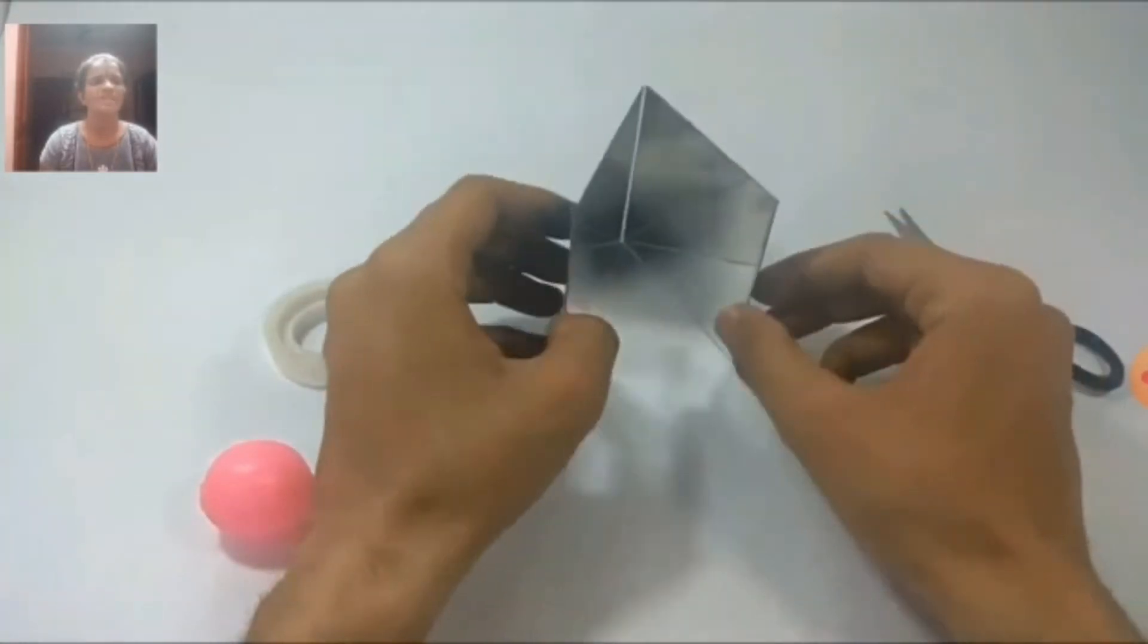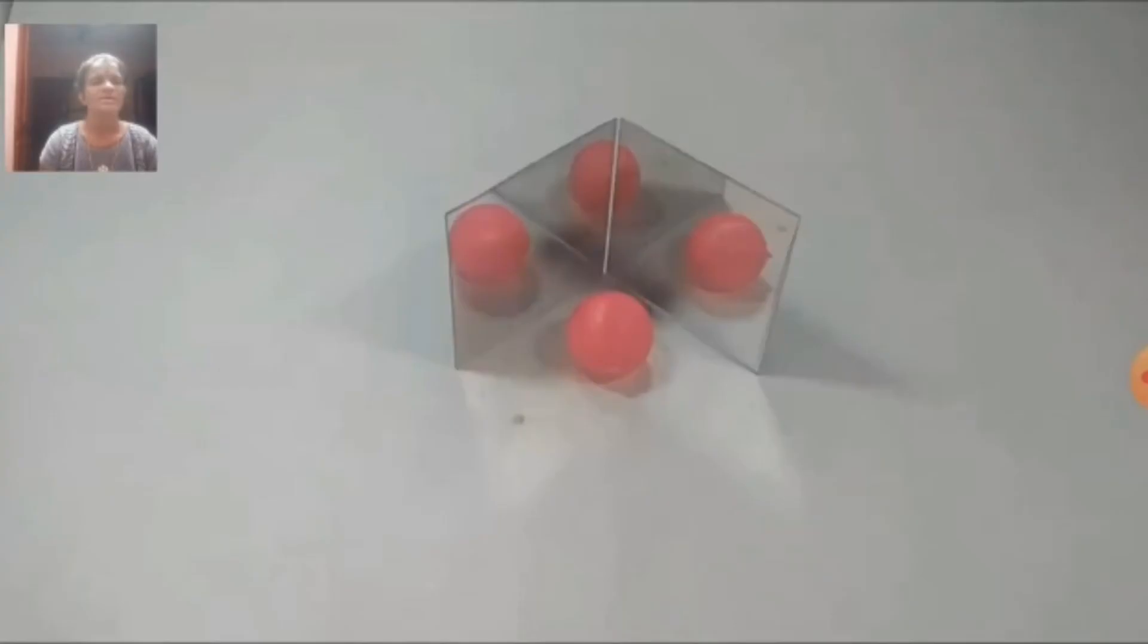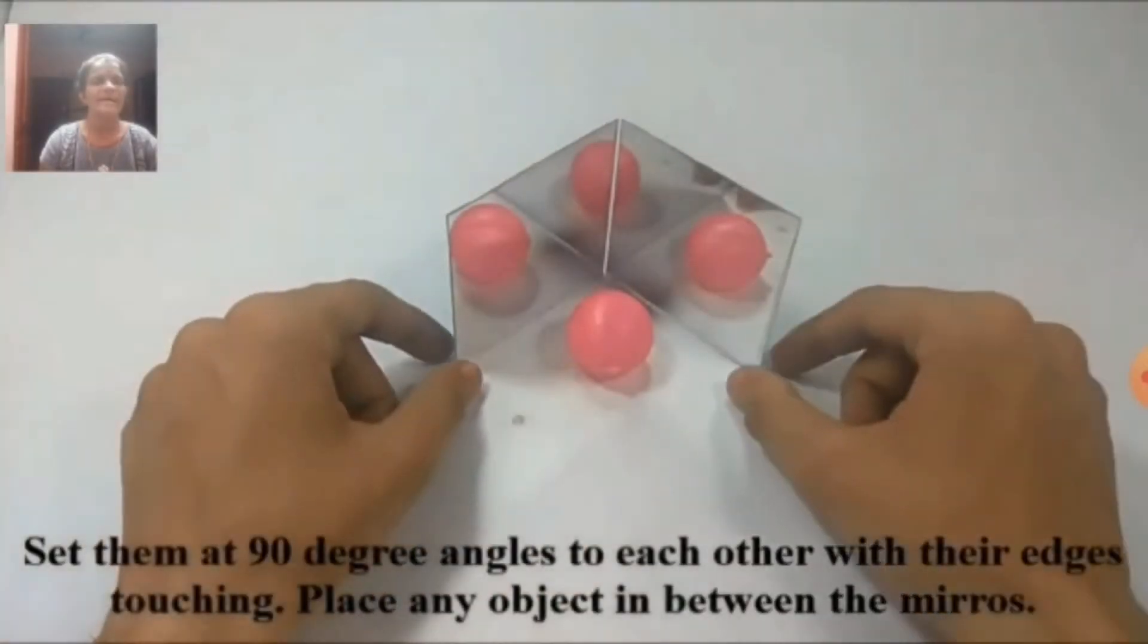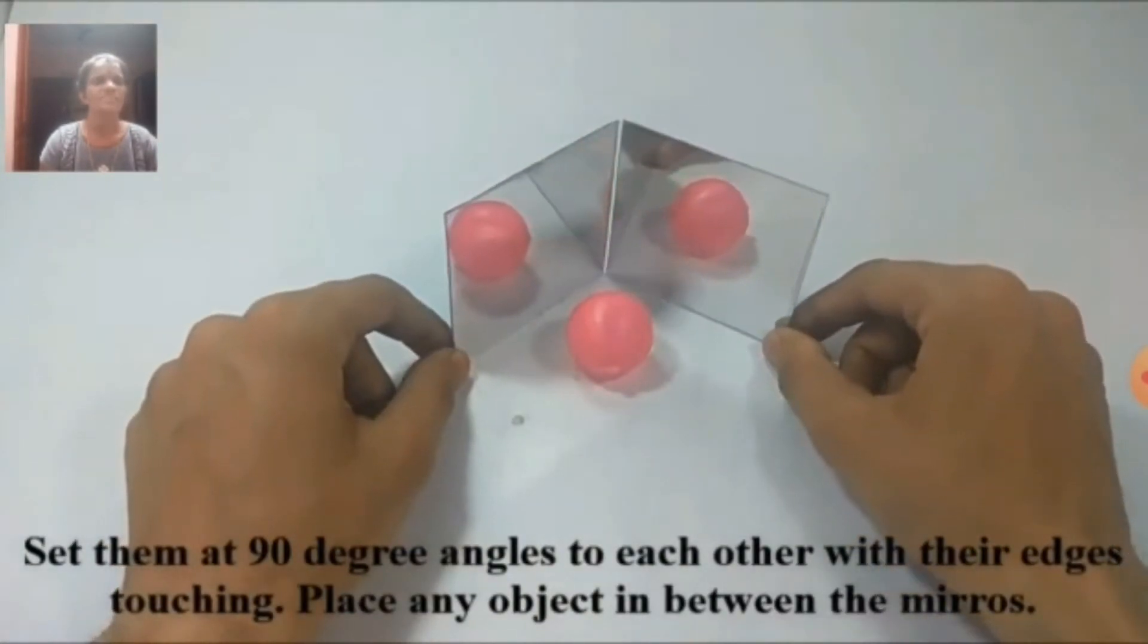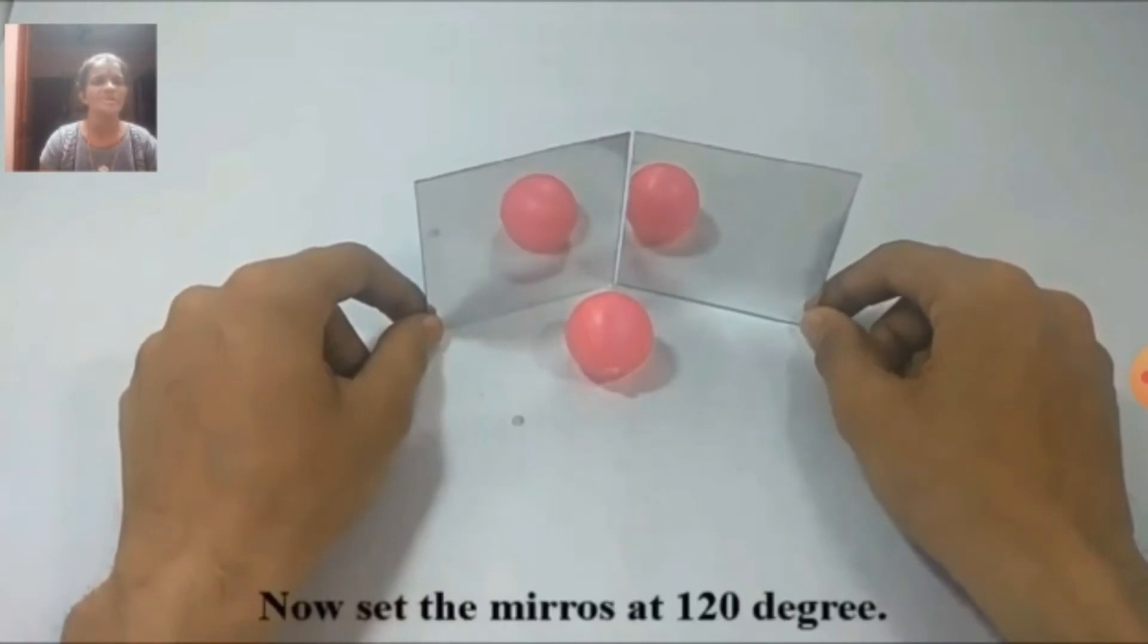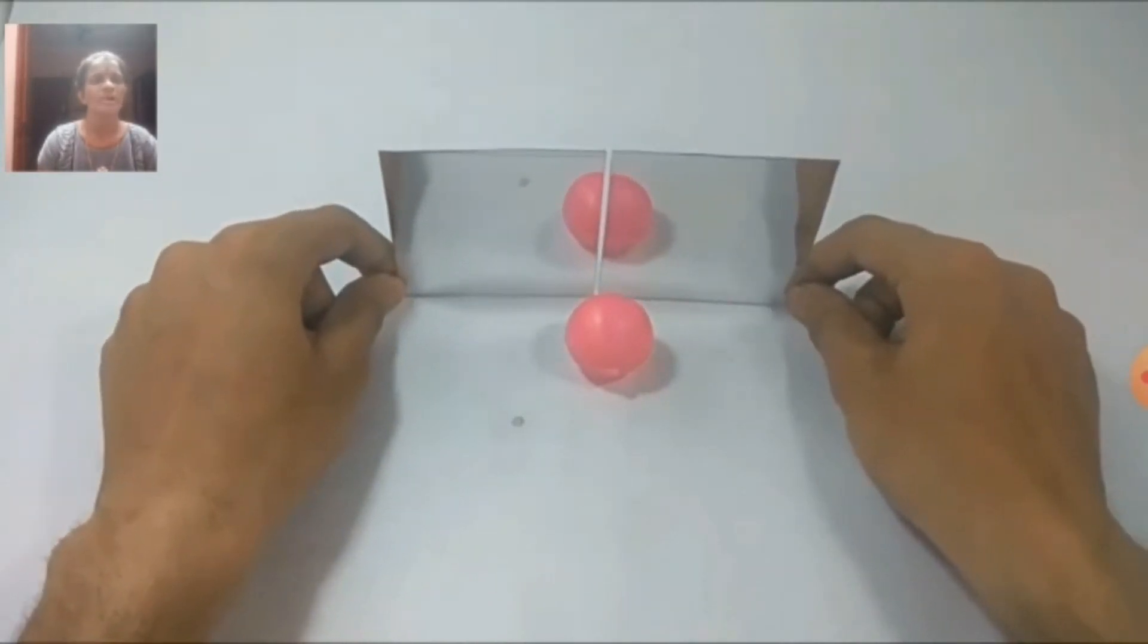Then set them at 90 degree angles to each other with their edges touching. Place any object in between the mirrors. Now set the mirrors at 120 degrees, then 180 degrees.